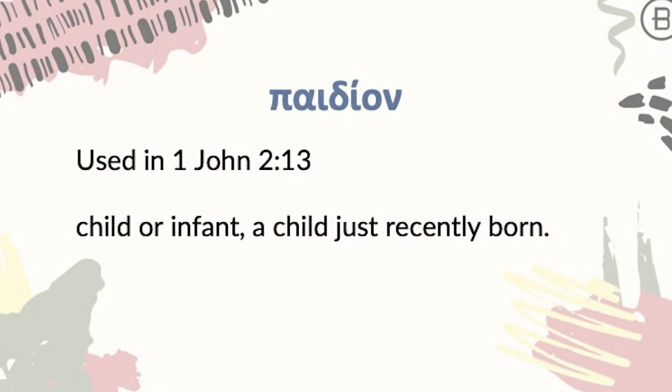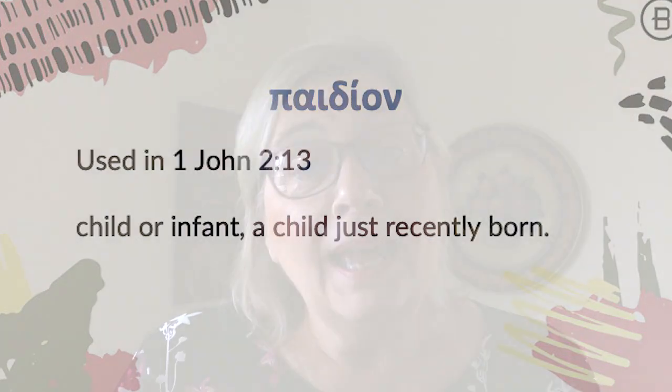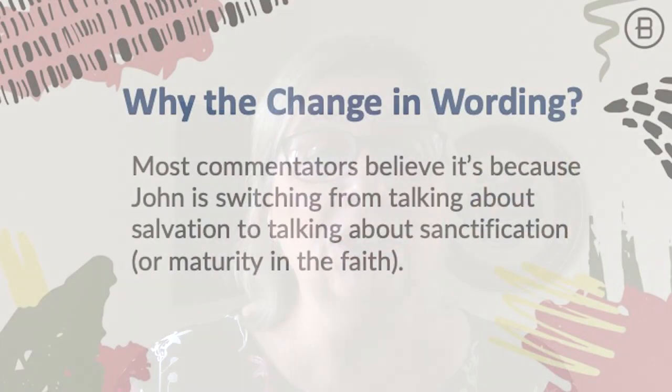The context of John's usage of technion, or little children, seems to indicate that 1 John is referring to children as people who believe in Jesus — believers. But in verse 2:13, John switches to a different word for children: paideon. This word is also translated as child, but it's more often used of an infant or a very young child, a child recently born. This led me to the question — why does John make this switch? Most commentators believe it's because he was shifting from talking about salvation to now talking about sanctification, or the maturing process.